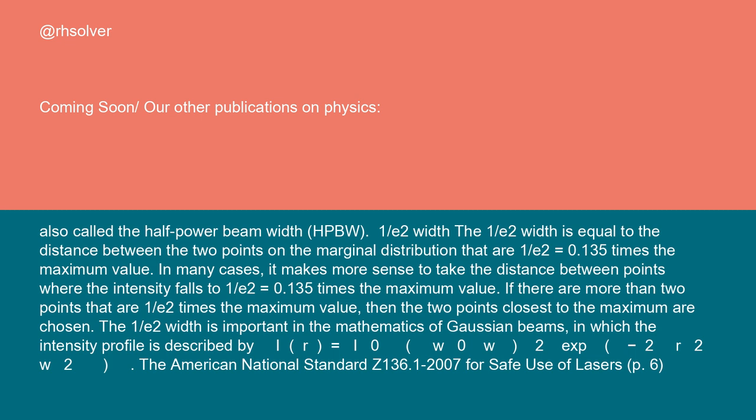The 1/e² width is important in the mathematics of Gaussian beams, in which the intensity profile is described by I(r) = I₀(w₀/w)² exp(-2r²/w²).